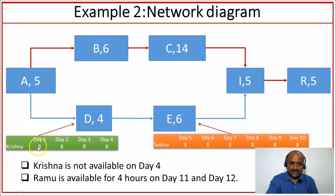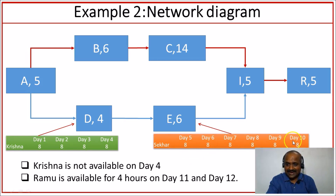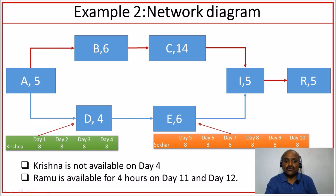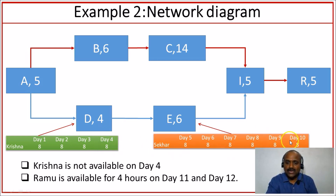Krishna is assigned for day 1, day 2, day 3, and day 4. Shaker is assigned for days 5 through 10 on Activity E. After planning, we came to know that Krishna is not available on day 4, meaning that part of the work cannot be done. Shaker is only available for 4 hours on day 11 and day 12. So let us see what happens with this technique called resource smoothing.